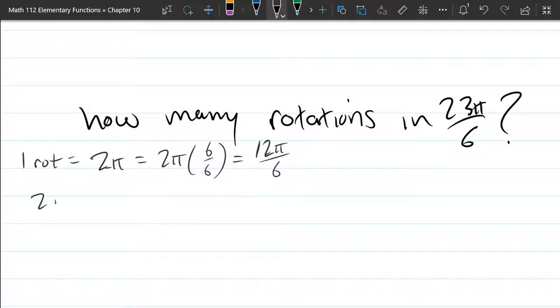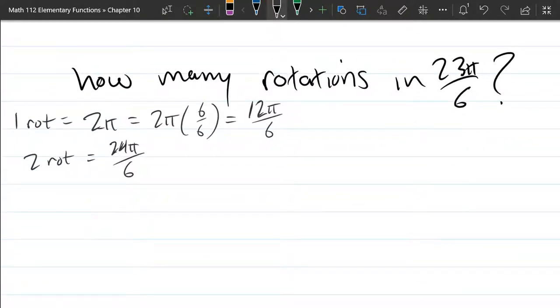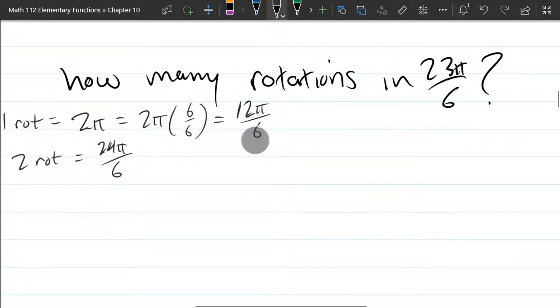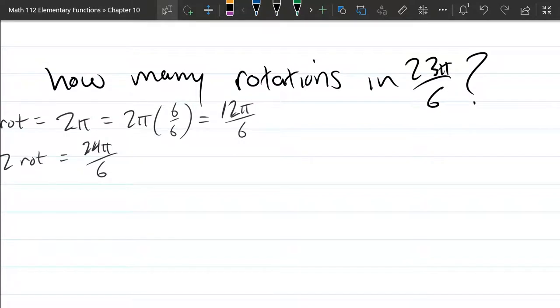Let's look at two rotations. I'm going to double 12π over 6 to 24π over 6. Alright, so that's really close to 23π over 6. So let's graph all, well we'll do this algebraically first and then we'll look at what the rotations look like on a graph.